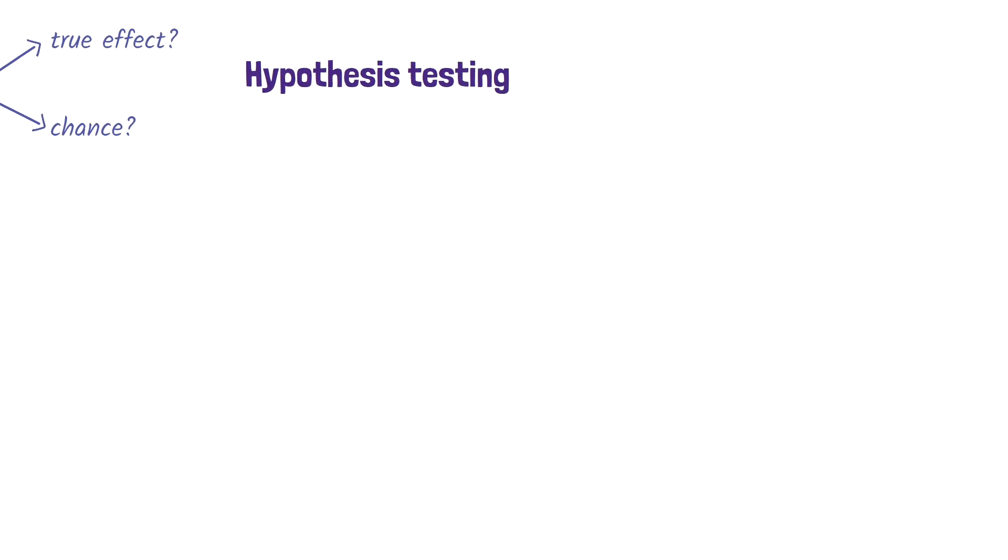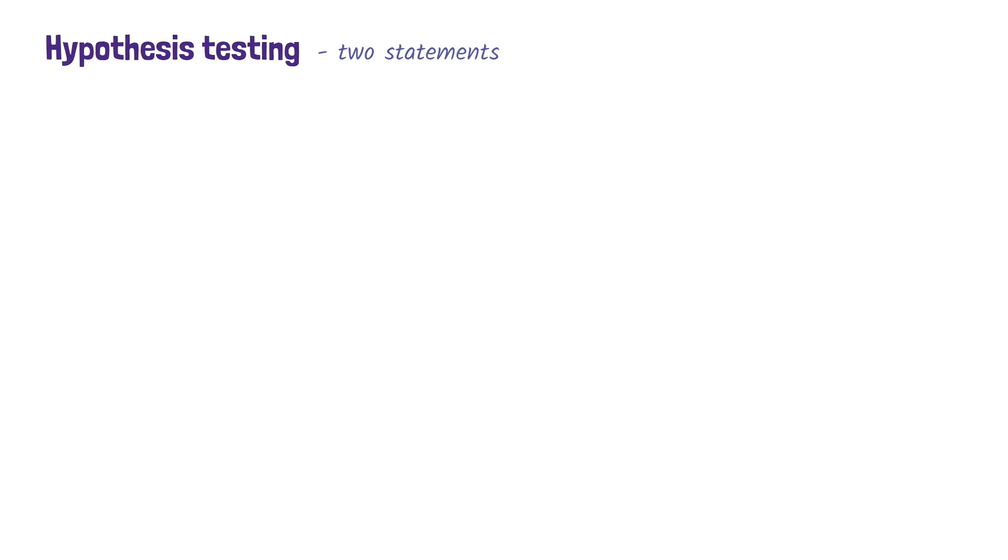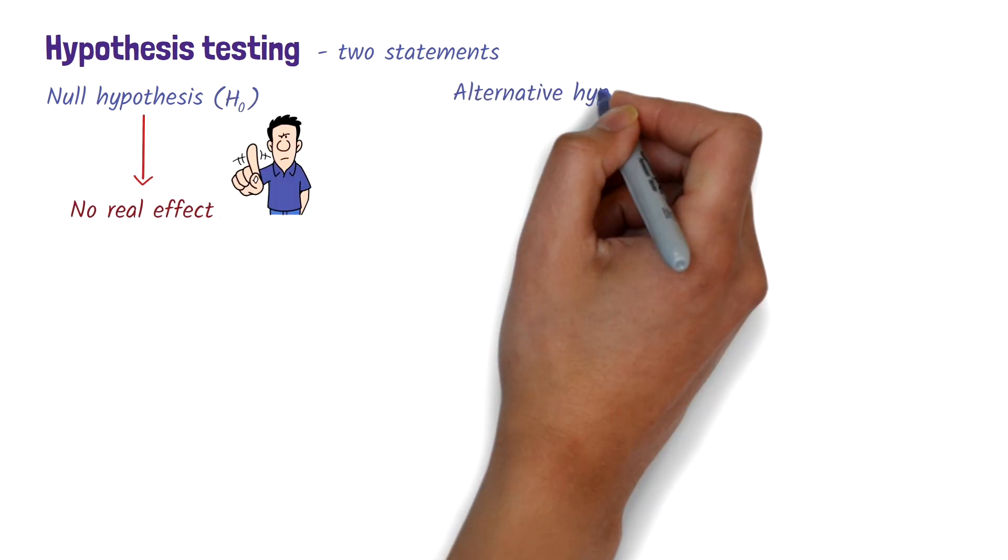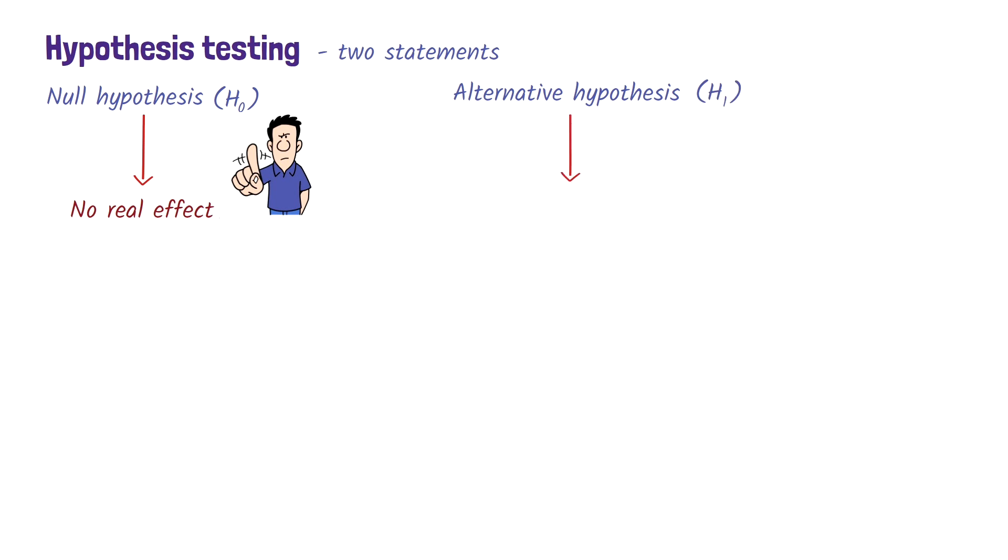In hypothesis testing, we start with two competing statements about the result of a study. The null hypothesis, or H0, states that there is no real effect, and an alternative hypothesis, H1, which states that a true effect does exist. We then determine which one is more consistent with the data we have. Let's go through an example to make it clearer.